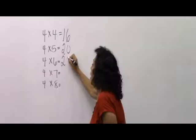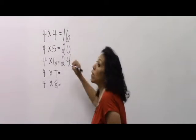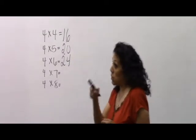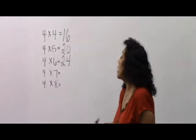Ashley, what is four times six? The answer is 24. We don't care — I don't care for that attitude.